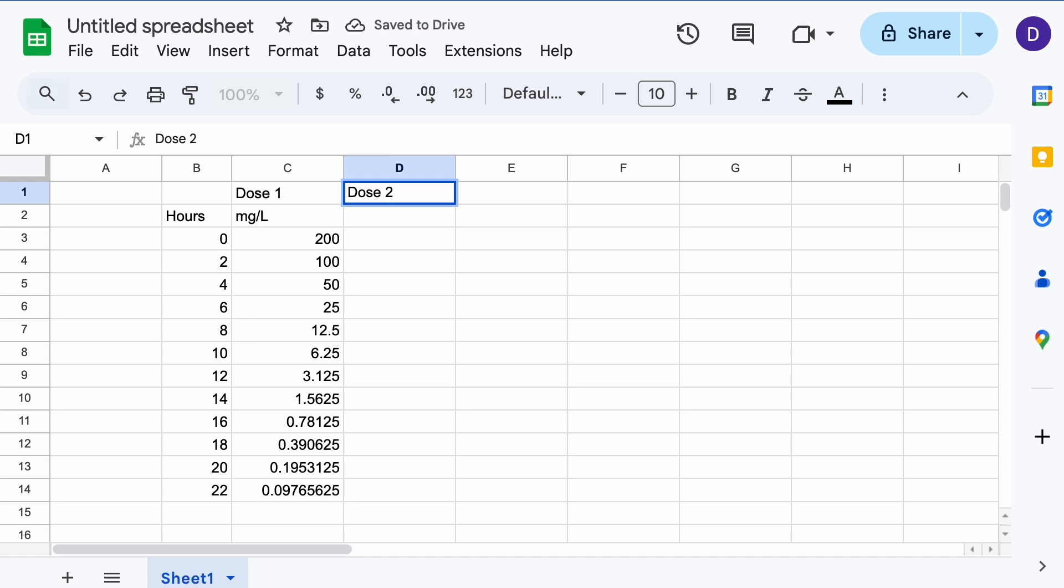The blood concentration won't be the same as the first dose, since there is already some Tylenol still in the body from the first dose. We will put the second dose in another column and line it up at the same time as the first dose.